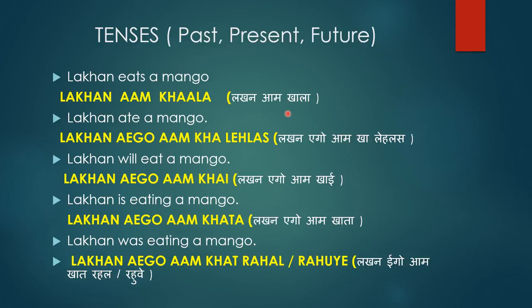In Bhojpuri, present tense would be 'Lakhan aam khala' — or in Hindi you might say 'Lakhan aam khaliya,' so 'Lakhan aam khala' is the Bhojpuri present form. Now for past tense, 'Lakhan ate a mango' becomes 'Lakhan aam khala elas.' 'Khala elas' means he has already eaten. Also note that 'aego' means 'ek' — sometimes they say 'ek' and sometimes 'aego,' it doesn't make much difference.